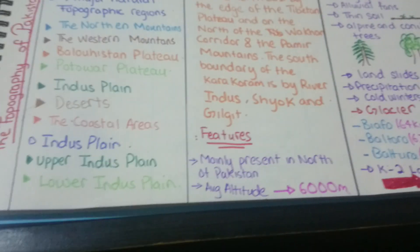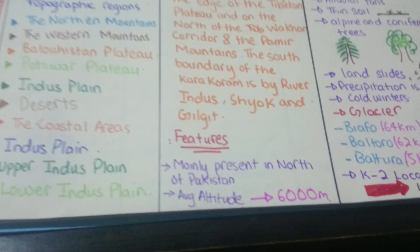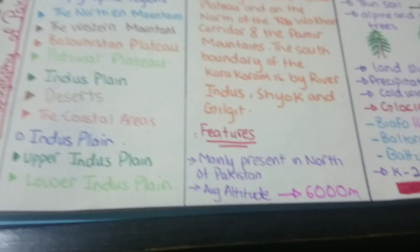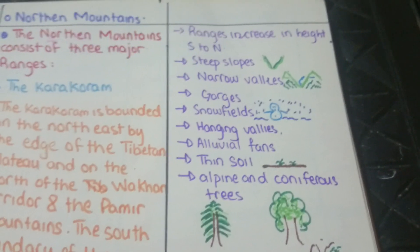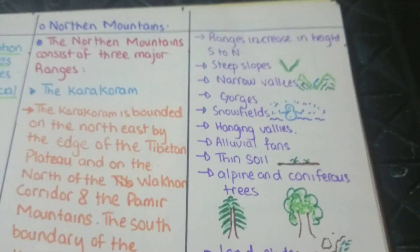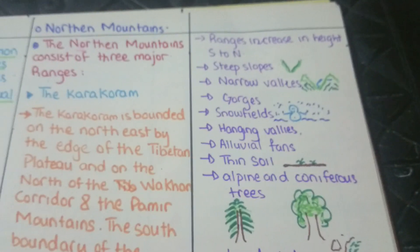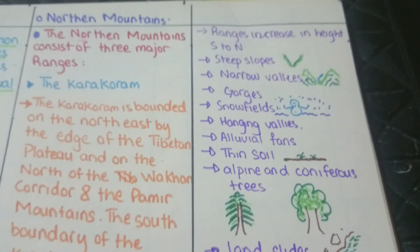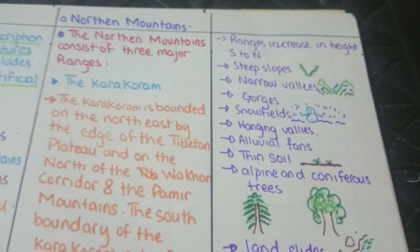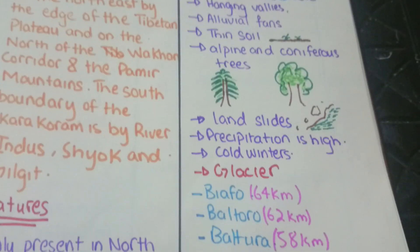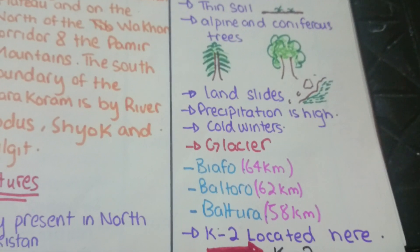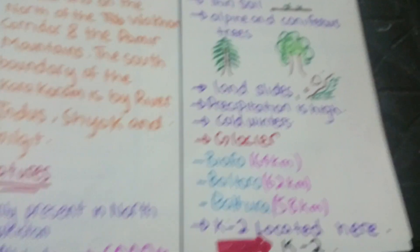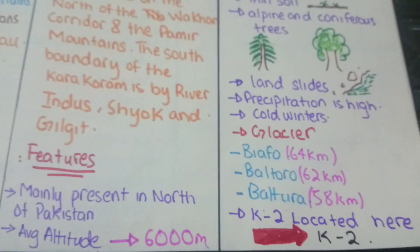The Karakoram is mainly present in the north of Pakistan. Average altitude is 6,000 meters, and ranges increase in height from south to north. Features include steep slopes, narrow valleys, gorges, snow fields, hanging valleys, alluvial thin soil, and alpine and coniferous trees. Landslide precipitation is high and cold winters are present. The three major glaciers are Biafo, Baltoro, and Baltora.